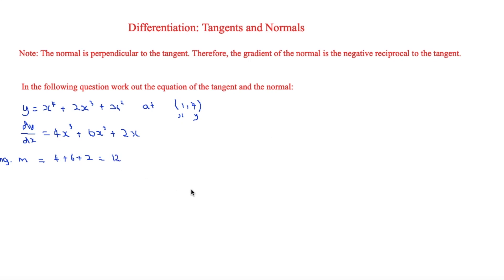Now, this is where the note that we have here comes into use. Because we know that the tangent gradient is 12, but the gradient of the normal is just the negative reciprocal to the tangent. And in order to take the negative reciprocal, you just take the reciprocal and then multiply it by minus 1.